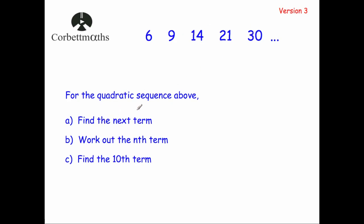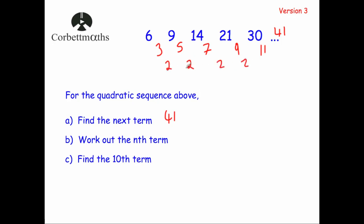The first part says find the next term. It goes up by 3, then 5, then 7, then 9 — so the next difference will be 11, giving us 41 as the next term. For finding the nth term, we look at the second differences, which are 2, 2, 2, 2. That equals 2a, so a = 1.